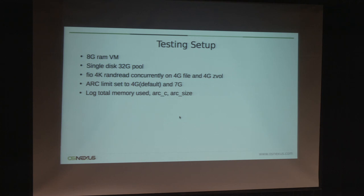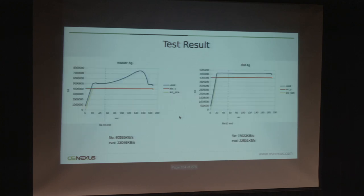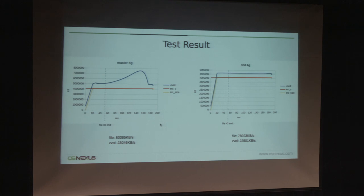Here are some interesting results. I set up eight gigs of RAM and a single disk pool, with a random read workload running concurrently on a 4G file and a 4G ZVol. The ARC size limit is set to 4G and 7G, and I logged total system memory usage, target ARC size, and ARC size. In the 4G ARC test, the left side is the master branch and the right side is my ABD branch. Both start from cold cache and gradually rise to the ARC limit and level out.